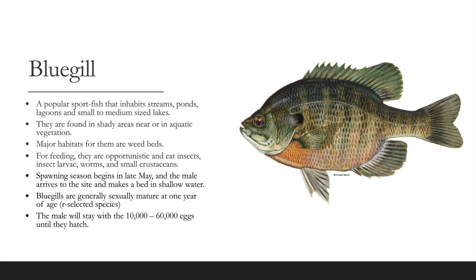The bluegill is a popular sport fish that inhabits streams, ponds, lagoons, and small to medium-sized lakes. Found in shady areas near aquatic vegetation and weed beds, they are opportunistic feeders consuming insects, insect larvae, worms, and small crustaceans. Spawning season begins in late May; males make beds in shallow water and guard 10,000 to 60,000 eggs until hatching. Bluegills are generally sexually mature at one year of age.